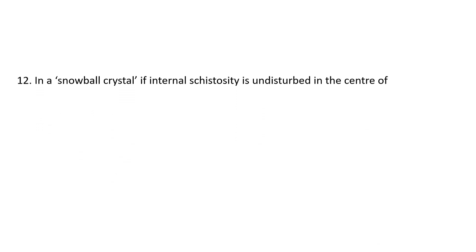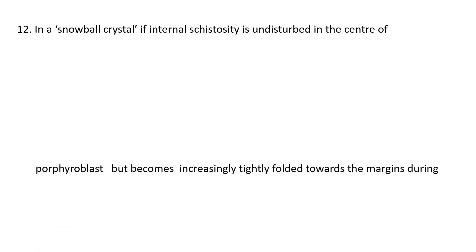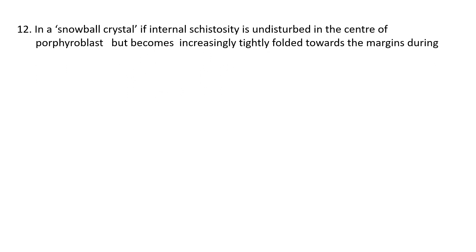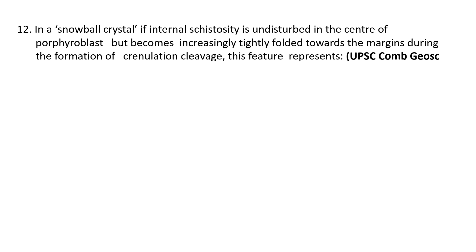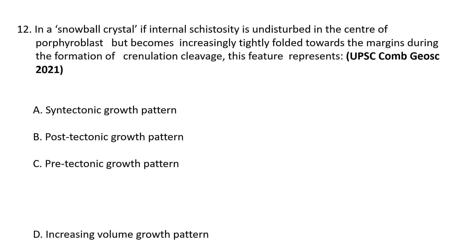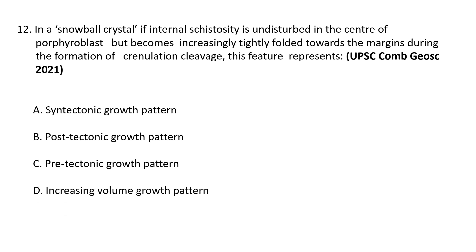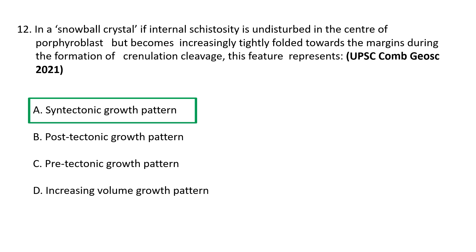Question 12: In a snowball crystal, if internal schistosity is undisturbed in the center of the porphyroblast but becomes increasingly tightly folded towards the margins during the formation of crenulation cleavage, this feature represents: (a) syntectonic growth pattern, (b) post-tectonic growth pattern, (c) pre-tectonic growth pattern, or (d) increasing volume growth pattern. The correct option is A — syntectonic growth pattern. Syntectonic porphyroblasts have grown during a single phase of deformation; inclusion patterns are generally curved in syntectonic porphyroblasts and random or straight in pre- and inter-tectonic porphyroblasts.